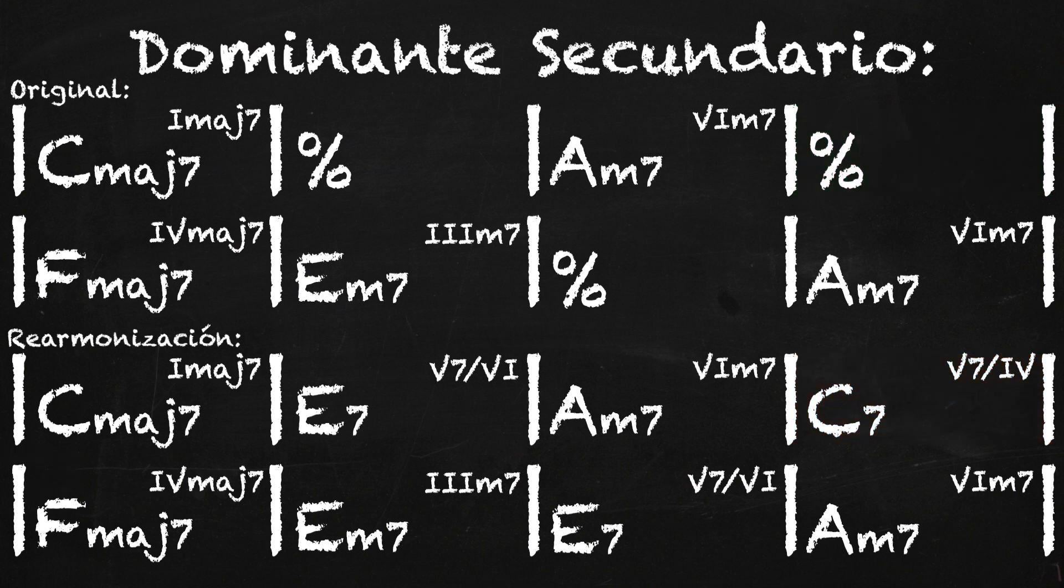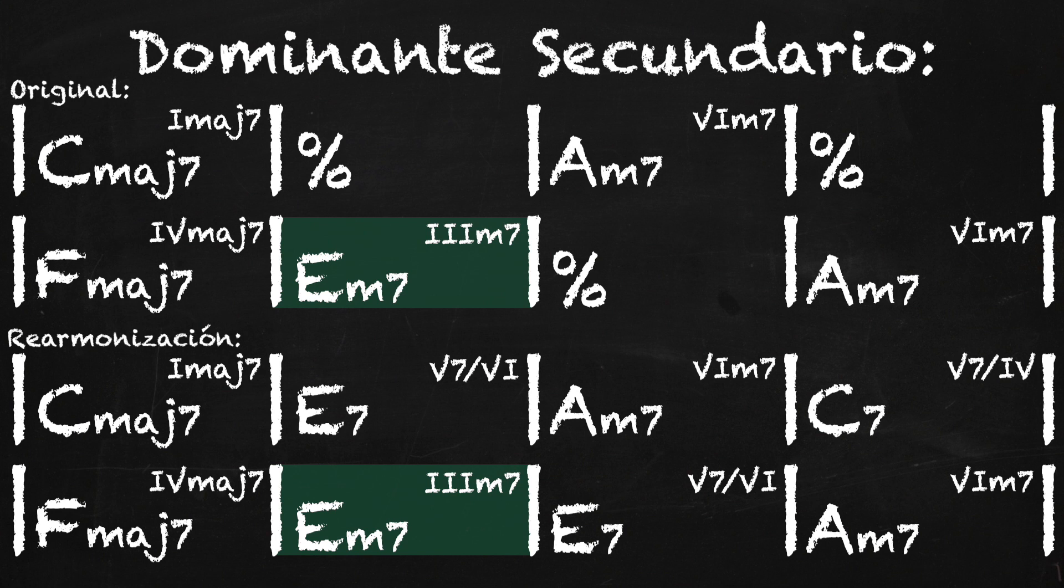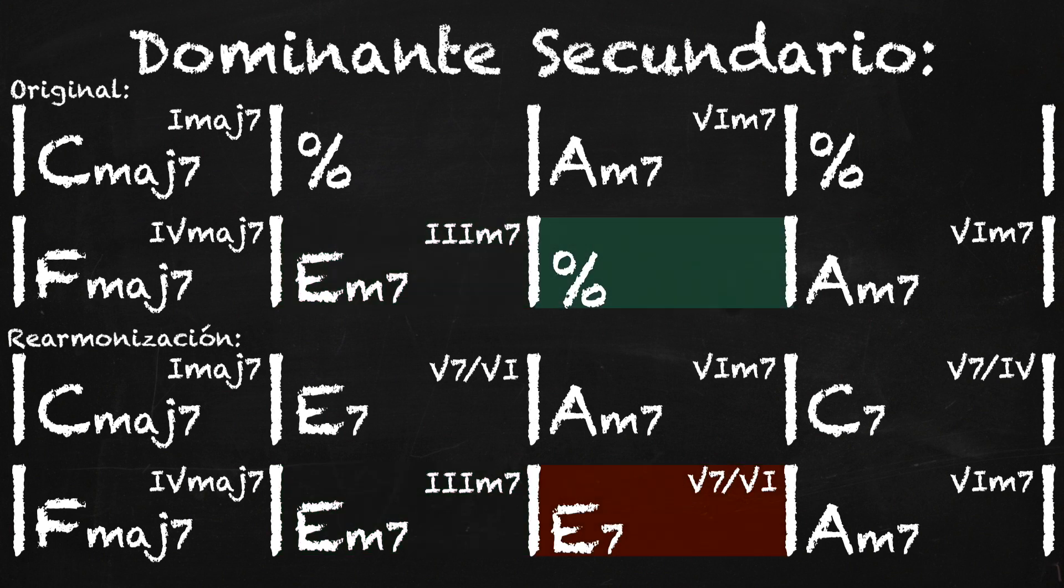El siguiente acorde es un Mi menor 7, y este sí lo conocemos y es un acorde absolutamente natural al Do maj7 por ser un tercer grado. Ahora bien, en el siguiente compás empezamos a encontrar que este Mi menor 7 se convirtió en un Mi 7 dominante, pero obviamente otra vez es para caer en el siguiente compás a un La menor 7.